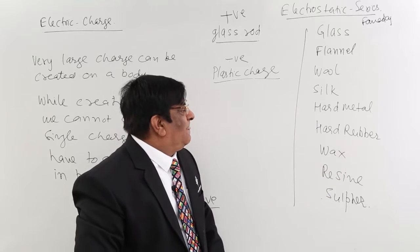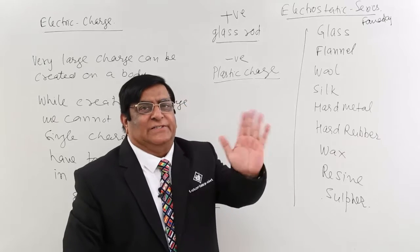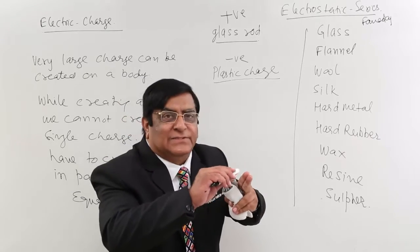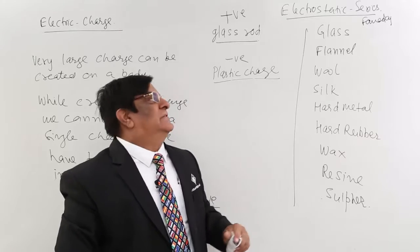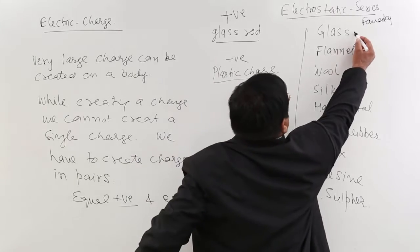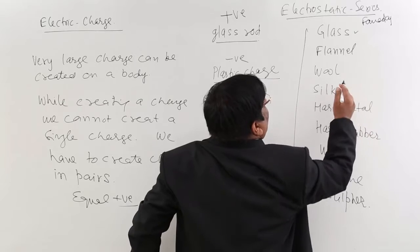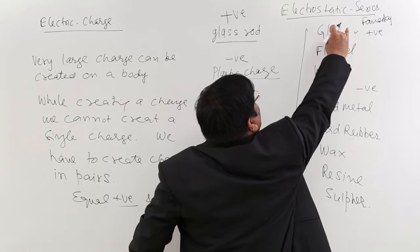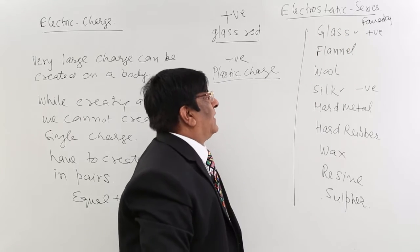Like if I ask you that I have a silk handkerchief and with that silk I am rubbing glass, then what is the charge on silk? You see here glass and silk. So glass will get positive and silk will get negative charge. It is higher on the series.